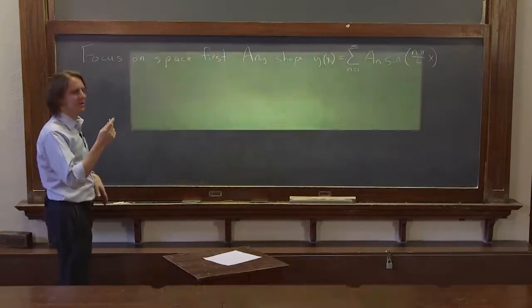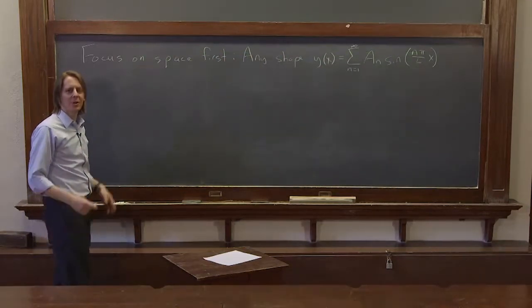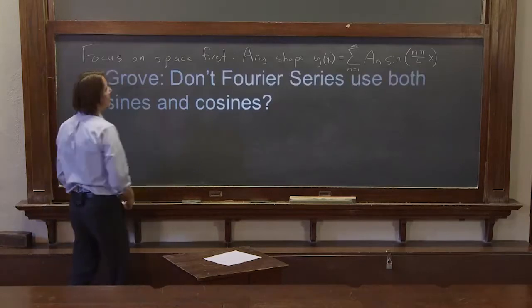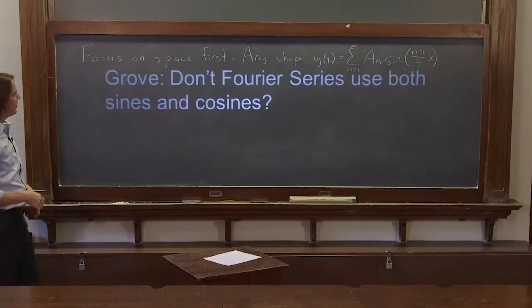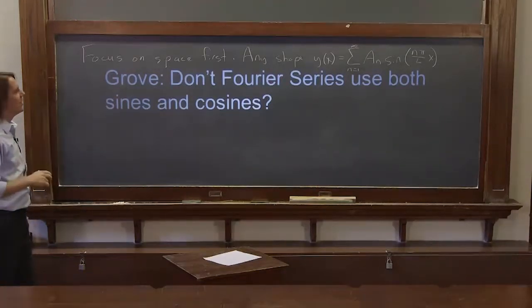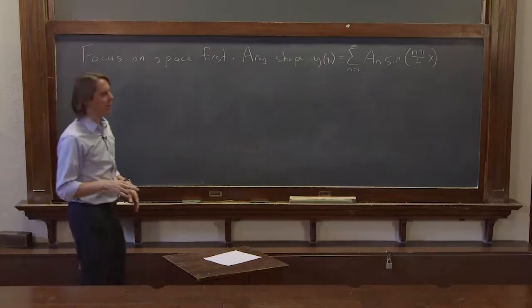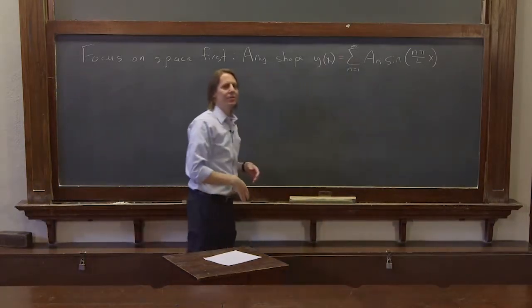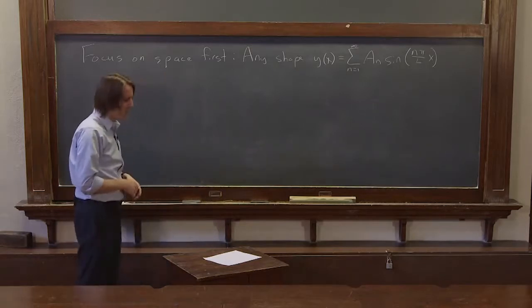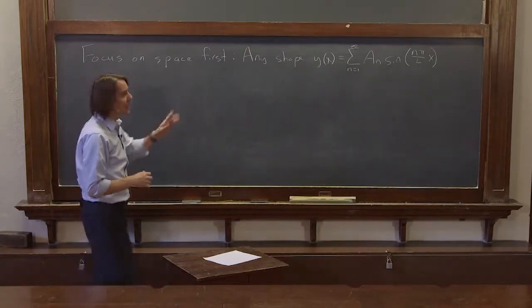Oh, we have our first question. I was wondering where you guys were. I didn't know if we're really going to get into the questions or not. Well, this one fits. Oh, Grove wants to know, don't Fourier series use both sines and cosines? Oh yes. And yes, they do use both sines and cosines. To get started, we're going to do a Fourier with just sine. And I'll give the general Fourier series later. But you can't actually do it with just a sine.